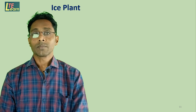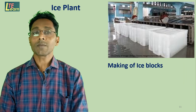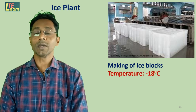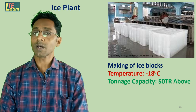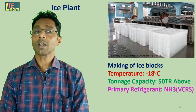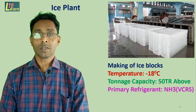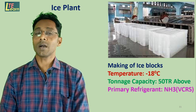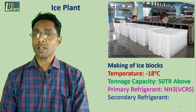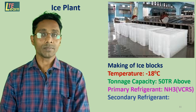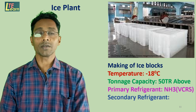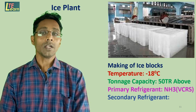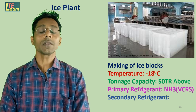Ice plant: For the making of ice blocks, an ice plant is used. The temperature requirement is minus 18 degrees Celsius to produce ice blocks. Two refrigerants are used here: a primary refrigerant used in VCRS, which is ammonia, and a secondary refrigerant cooled by the primary — called brine solution, which is a solution of water and sodium chloride or ethylene glycol.